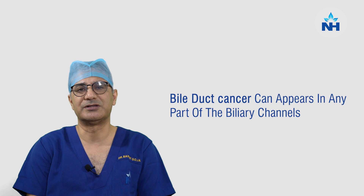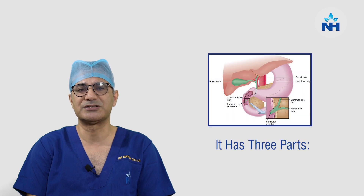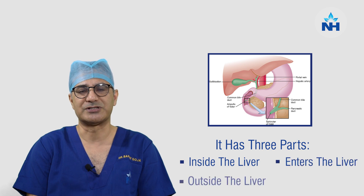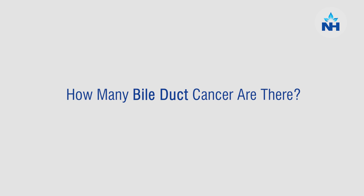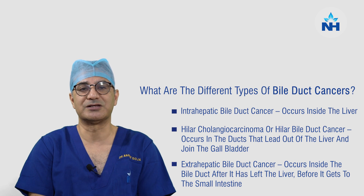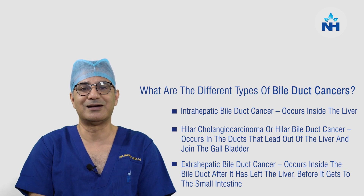There are three parts of the biliary channel. One is inside the liver, called intrahepatic bile duct cancer. Then at the point where the biliary channels join and form the main two channels and leave the liver, which is called hilar cholangiocarcinoma or hilar bile duct cancer. Then there is a part of the bile duct which runs down and enters the intestine, called the extrahepatic bile duct.